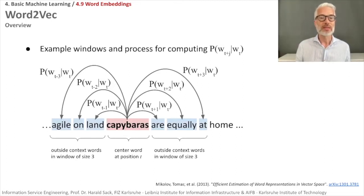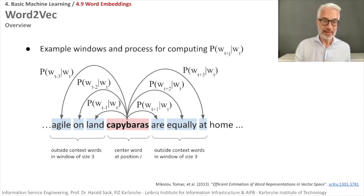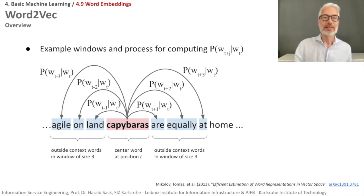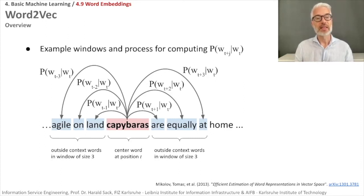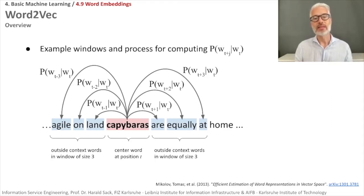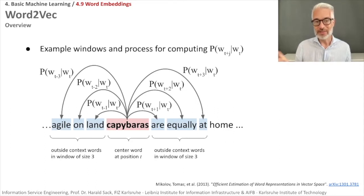Let's go into more detail. We have an example window of size three. We process the text and compute the probability of a specific word from the context. The context words are in the range of w_t minus j to w_t plus j, where j equals three and w_t is our center word. For example, capybaras is the center word and we need to compute all probabilities for the context: agile, on, land, and equally, at. Importantly, when you compute this kind of probability you don't say anything about the sequence — it is a bag-of-words approach.